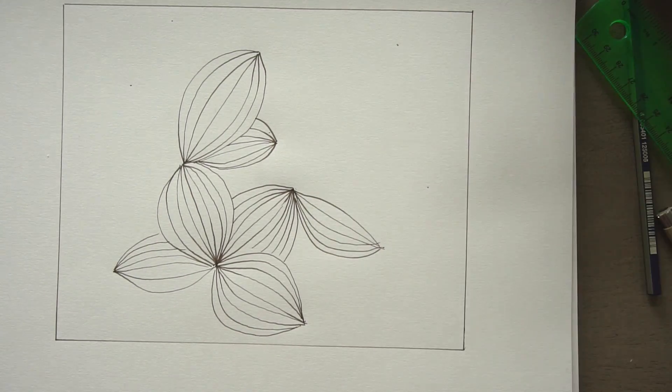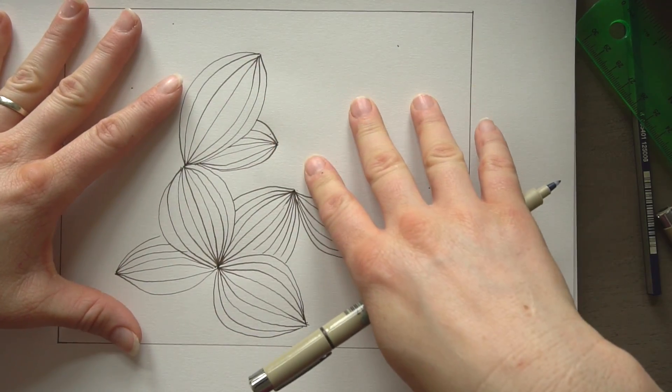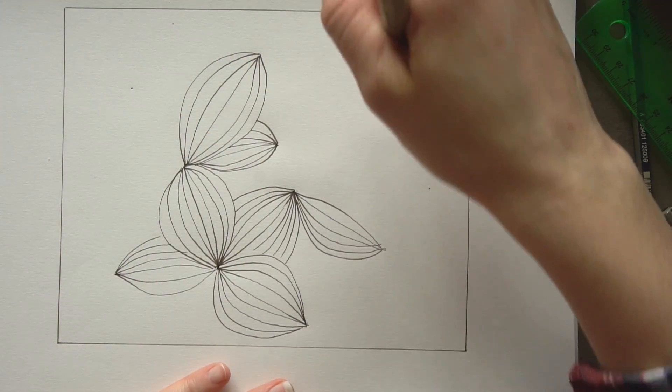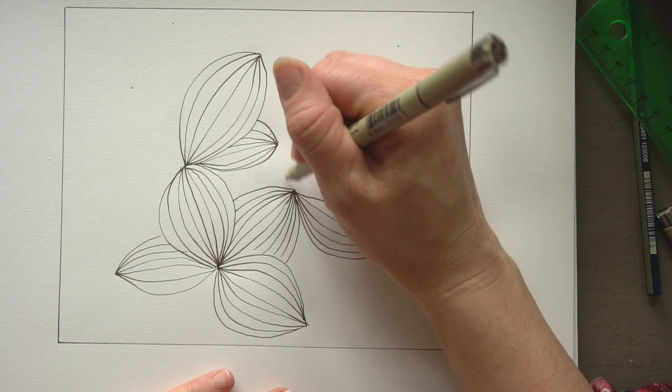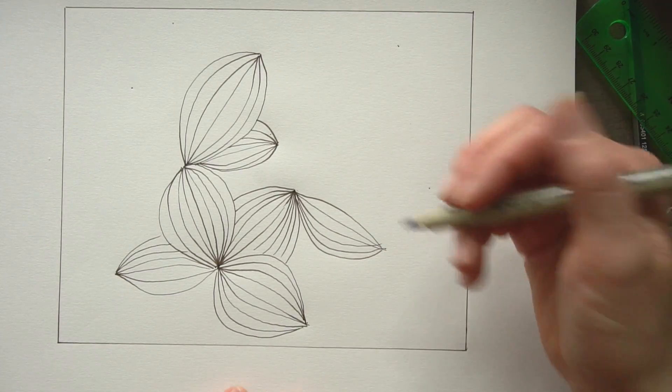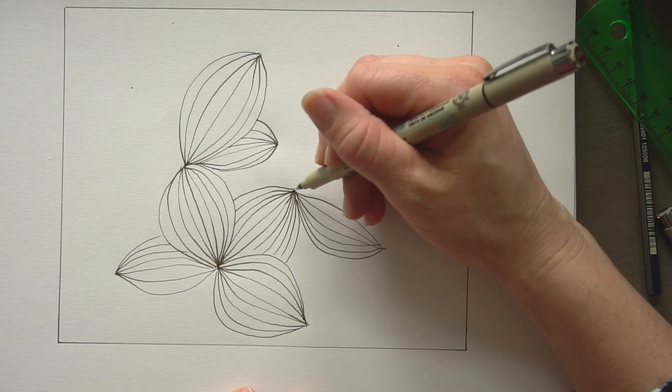And then you just keep doing this until you fill in your entire paper. You can bring some of these off of your paper. You can add dots where you feel like you need some. Like something's got to happen in here. Maybe I'll add just a tiny little one in there.